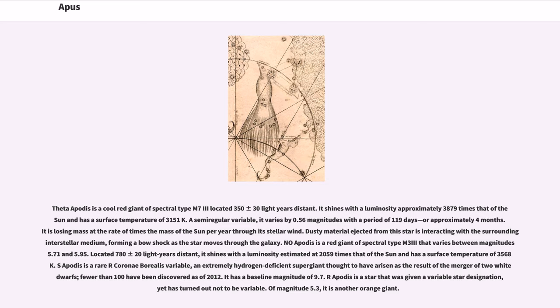R Apodis is a star that was given a variable star designation, yet has turned out not to be variable. Of magnitude 5.3, it is another orange giant.